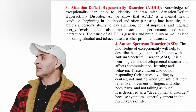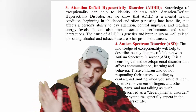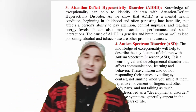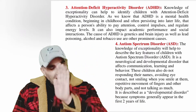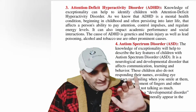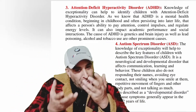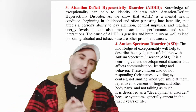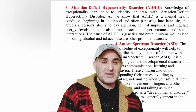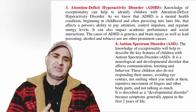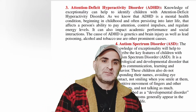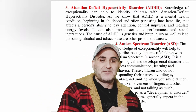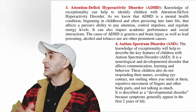The prominent causes of ADHD are genetics — meaning the transmission of characteristics from parents to offspring. If parents have ADHD syndrome, it is directly transmitted through genes to their children. The second cause is brain injury. Apart from it, lead poisoning, alcohol, and tobacco are other prominent causes of attention deficit hyperactivity disorder.